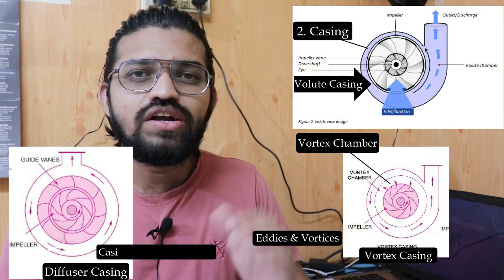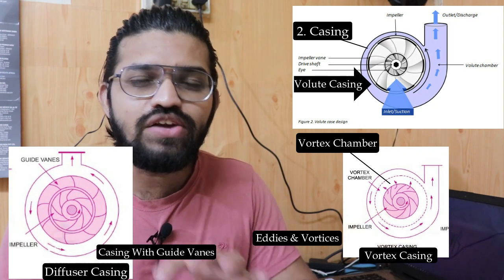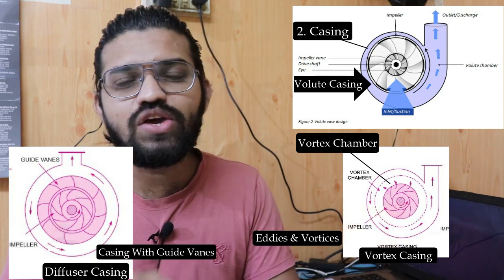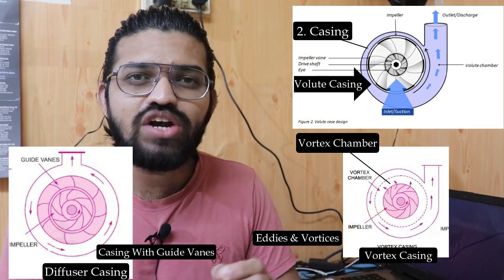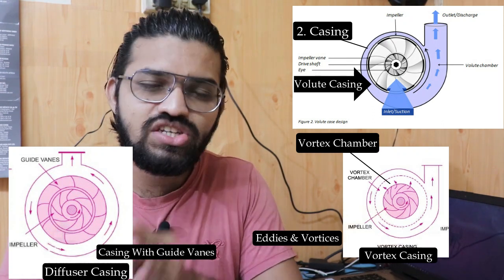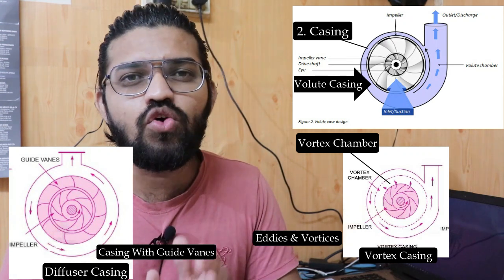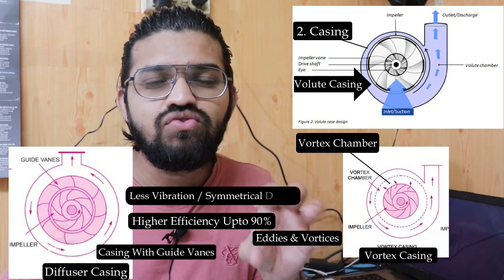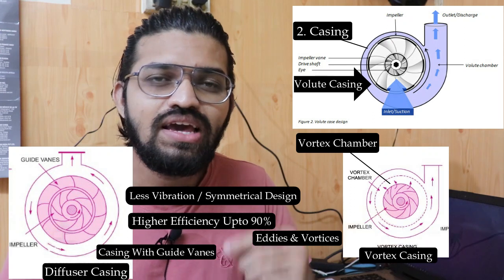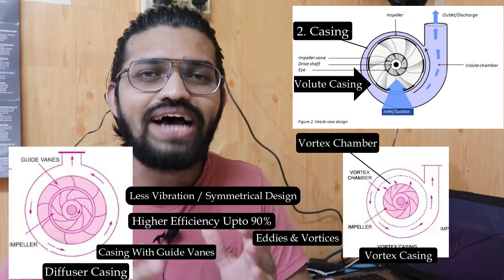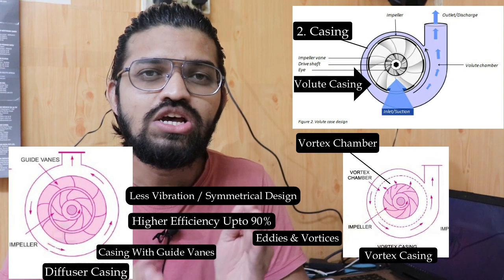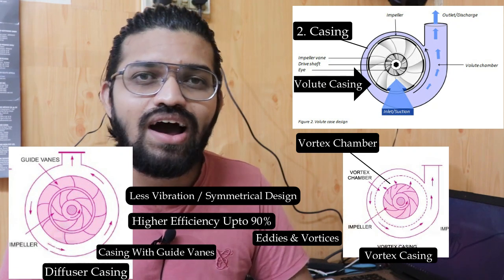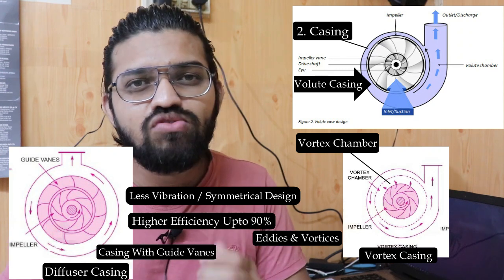In the diffuser type casing, extra guide vanes surround the impeller to reduce liquid losses. The diffuser remains stationary while the impeller continuously rotates. This type of casing provides higher efficiency up to 90%. Additionally, because of its symmetrical design, very little vibration is produced compared to the other two casing types, which increases bearing life and makes these pumps more reliable and longer lasting.